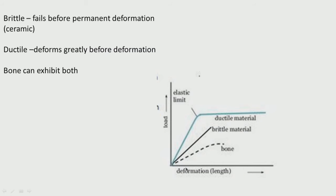This picture shows a ductile material, a brittle material, and bone. A brittle material fails before permanent deformation — like ceramic. A ductile material deforms greatly before failure. Bone can exhibit both behaviors. A brittle material will not show any ductility — it will just fail.